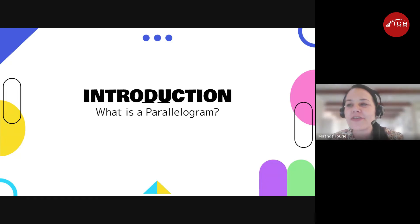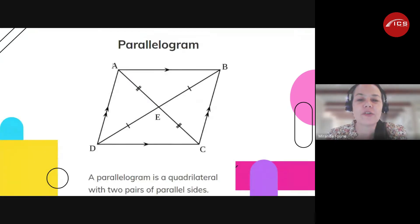A parallelogram, guys, is a quadrilateral because it has four sides. So you get quad bikes and those quad bikes have four wheels - that's how I remember. It's a quadrilateral and it has two pairs of parallel sides.